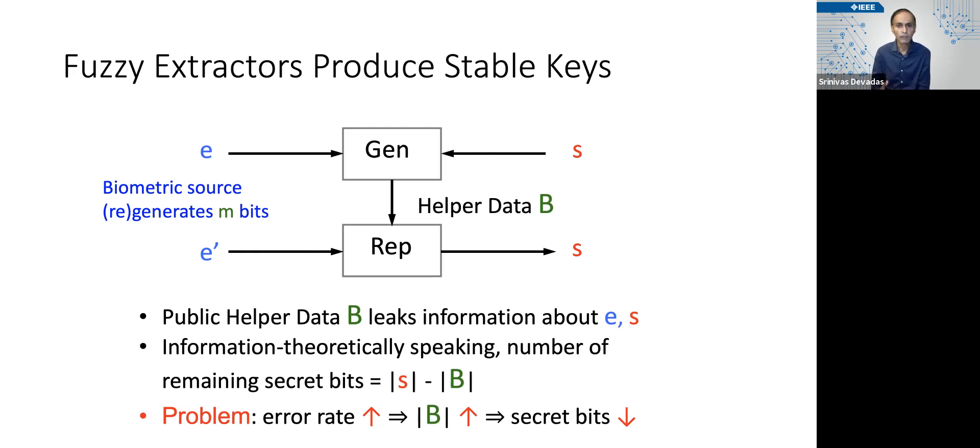Which means that you have to use more e bits to encode these s bits, and that in turn increases the number of errors, if not the error rate, which increases the size of B. So it's quite a delicate process to choose the values of the numbers of e, s, and B in order to get an information theoretic security argument.